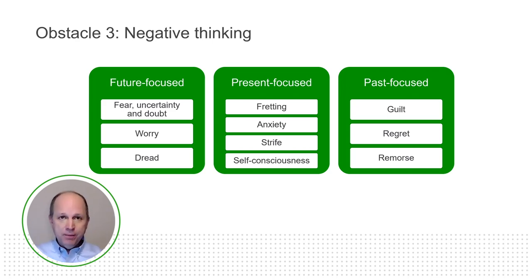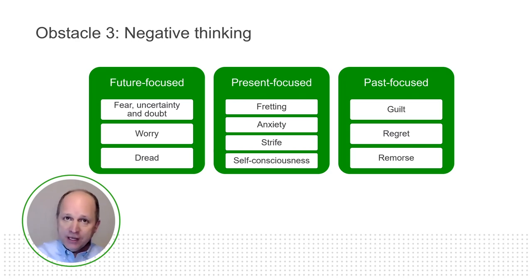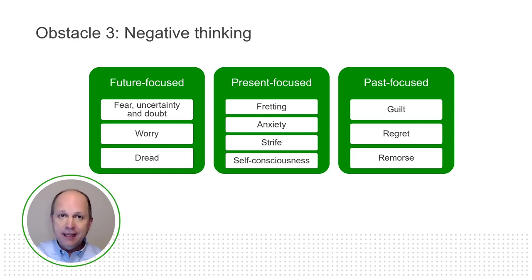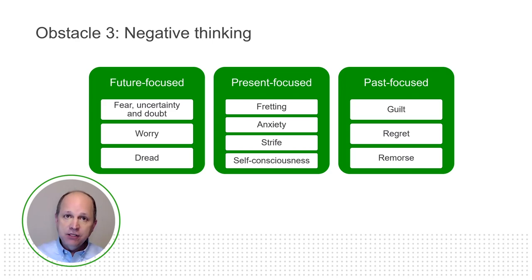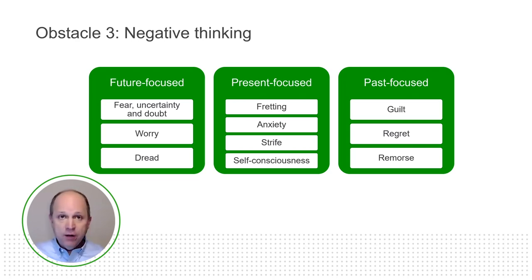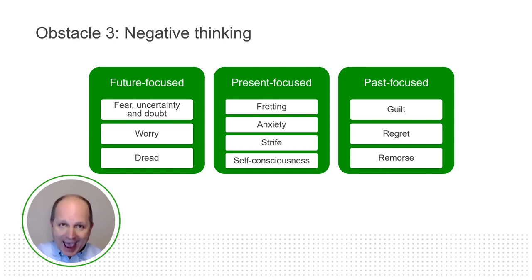But if you think you're safe in the middle — fretting, anxiety, strife, and self-consciousness — you're not safe. The intersection of reality in your life is not just the present; it is the present you currently inhabit. Fretting is energy exerted over situations where we have no control. Anxiety is a similar kind of thing. Strife is mental energy exerted over the normal and unavoidable frictions of life. And self-consciousness is energy exerted when I'm focused on myself rather than the effectiveness I need to be generating.